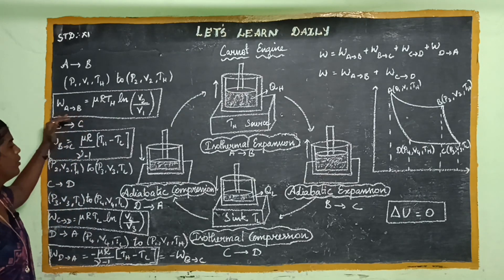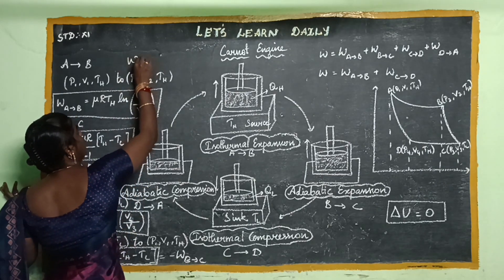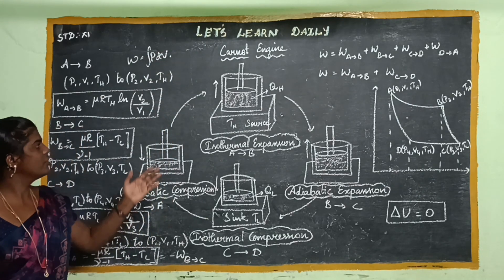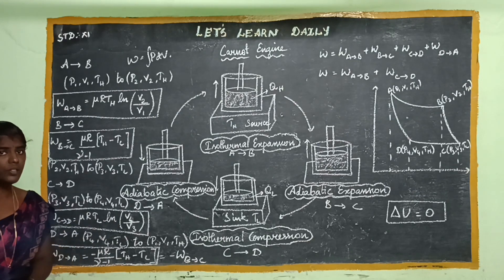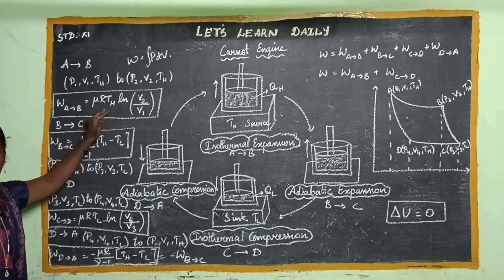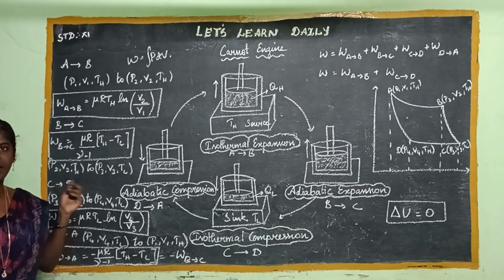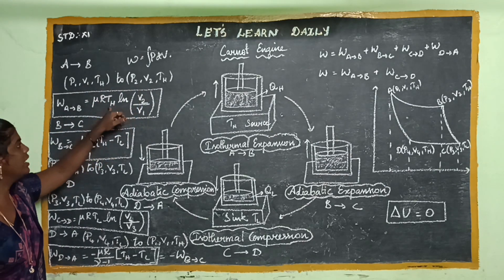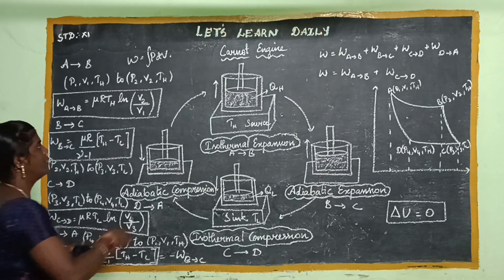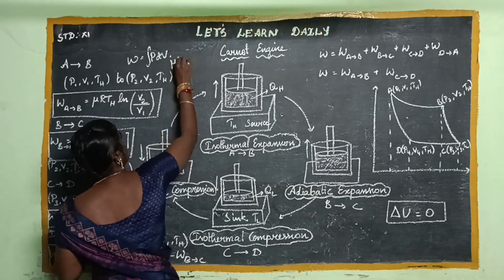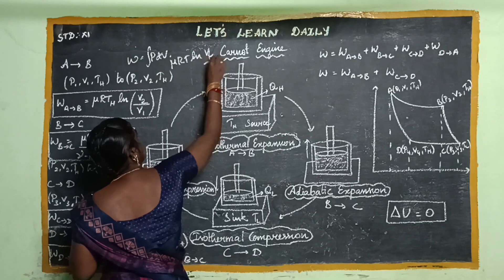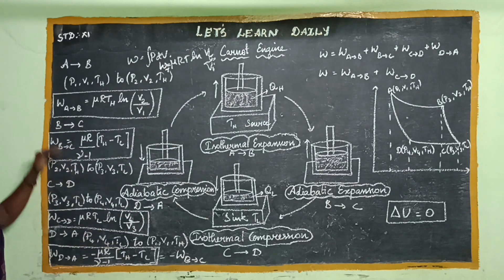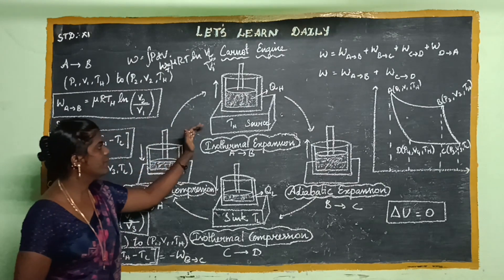Now we write the work done. The general formula is the integral of P dV. For an isothermal process, the final equation is: W = μRT · ln(Vf/Vi). Here, Vf = V2 and Vi = V1, and the temperature is TH. So the formula is W = μRTH · ln(V2/V1).